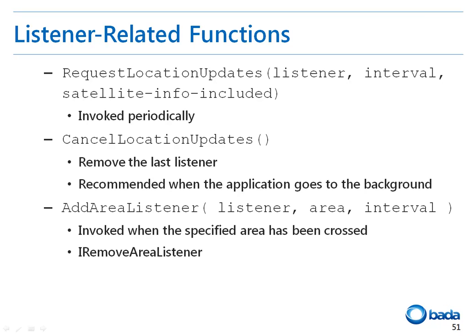A listener is used to deliver the location information to an application. There are functions that manage listeners such as the RequestLocationUpdate, CancelLocationUpdate, and AddAreaListener functions. The RequestLocationUpdate function reports the current position at a predetermined interval through the registered listener whenever the location changes. The CancelLocationUpdate function is used to delete the listener registered in the RequestLocationUpdate function. The AddAreaListener function calls a specific function of the listener object when the location moves out of or enters a predetermined area. You can delete the listener using the RemoveAreaListener function.